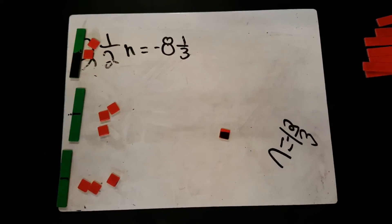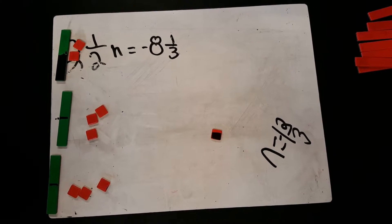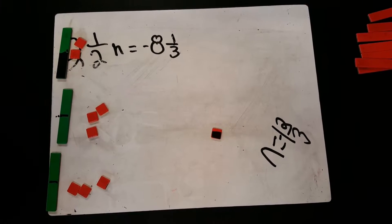So we have how many half groups that we're splitting into? Five. Okay, can you start splitting the eight and one-third into our five equal groups there?